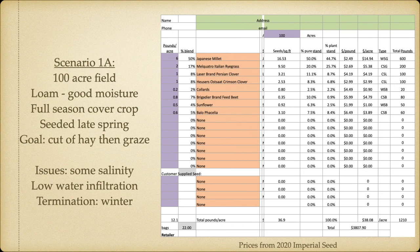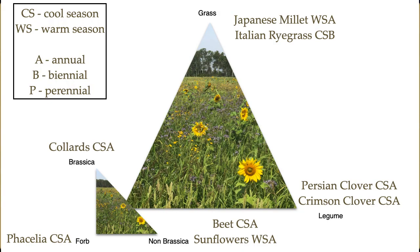Breaking that blend down into the chart: our grasses — we have a warm season grass with Japanese millet and a cool season biennial with Italian ryegrass. Going to legumes, we have two cool season annuals — Persian and crimson clover. The collards are a cool season annual brassica. Our phacelia is a cool season annual non-brassica. We have a cool season annual with the beet and a warm season with the sunflower.